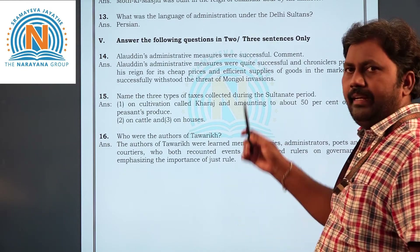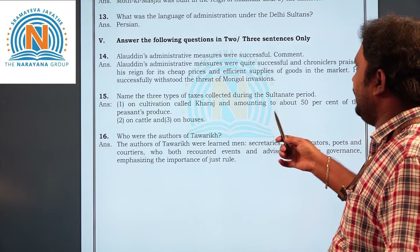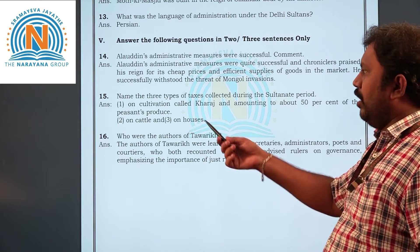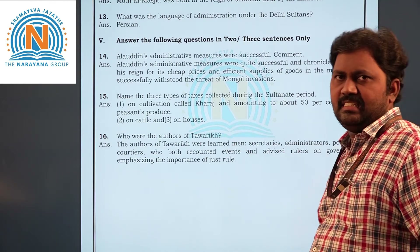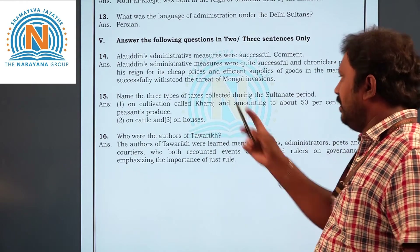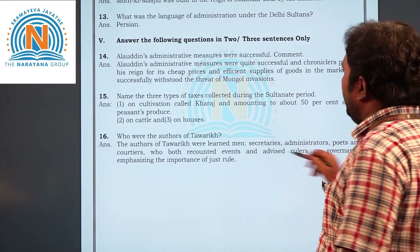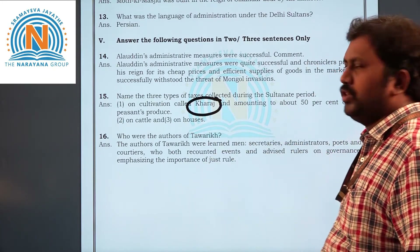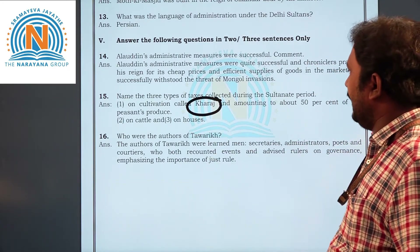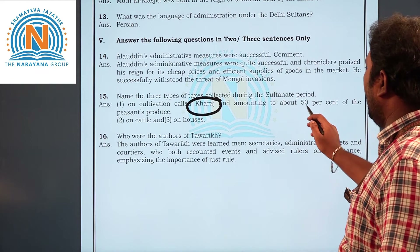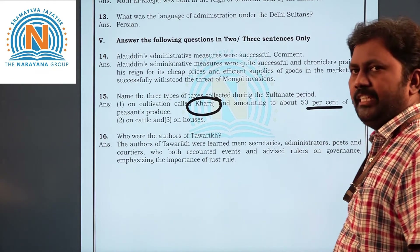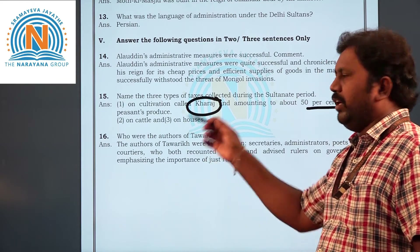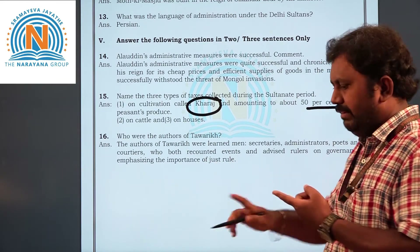Question fifteen: name the three types of taxes collected during the Sultanate period. The answer is: Kharaj — tax on cultivation, which was 50 percent of the peasant's produce; tax on cattle; and tax on houses. So the three taxes are on cultivation, cattle, and houses.